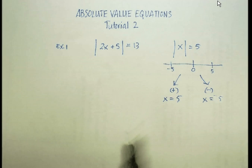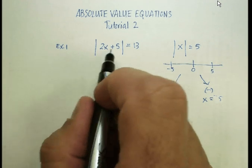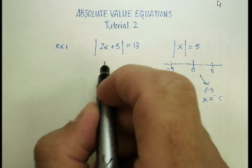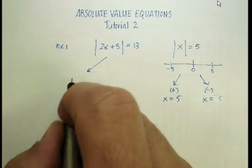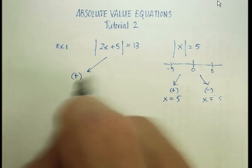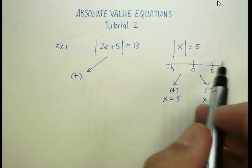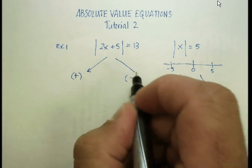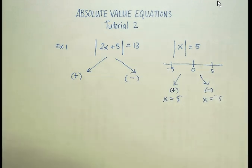So, the absolute value of 2x plus five is equal to 13. What am I asking you to find? I'm asking you to find the positive side of the number line, what point on the positive side, and what point on the negative side. Now, sometimes, well, actually, we'll just go ahead and do this one and show you how it works.